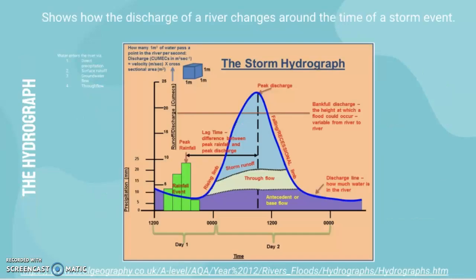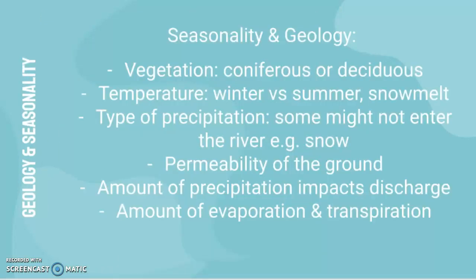The amount of precipitation also impacts discharge. More evaporation and transpiration means water received from precipitation becomes an output and may not contribute to discharge — though this is considered a fairly minor factor.